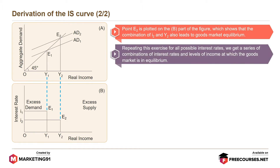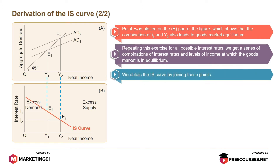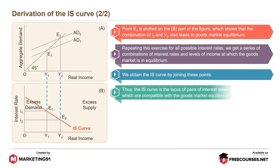Repeating this exercise for all possible interest rates, we get a series of combinations of interest rates and income levels at which the goods market is in equilibrium. We obtain the IS curve by joining these points. Thus, the IS curve is the locus of pairs of interest rates and income levels which are compatible with goods market equilibrium.